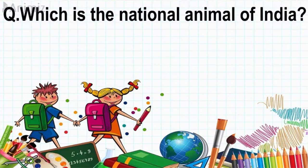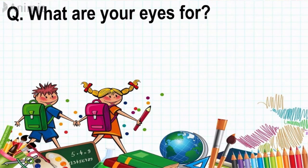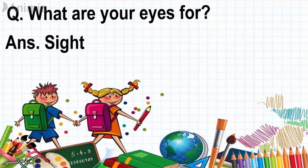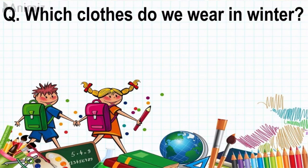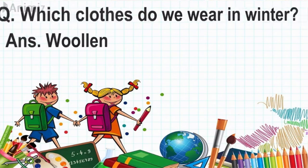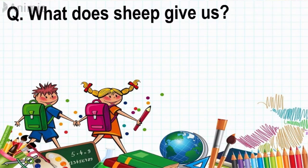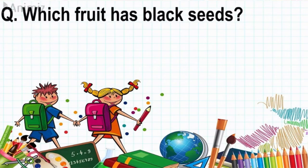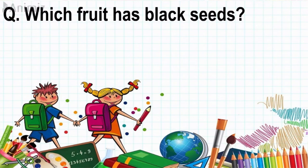Answer: Tiger. Question: What are your eyes for? Answer: Sight. Question: Which clothes do we wear in winter? Answer: Woolen. Question: What does sheep give us? Answer: Wool. Question: Which fruit has black seeds? Answer: Watermelon.